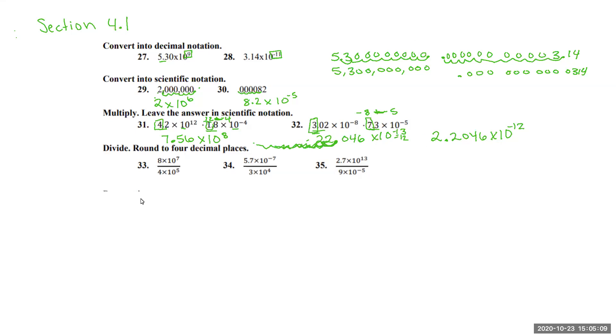Now going down to number 33, we're going to do the same thing where we start out with the numbers first. 8 divided by 4 is going to be 2. And then using the rules from above, when you're dividing bases the same, you want to minus these exponents. So we're going to do 7 minus 5, which is going to give us 2.